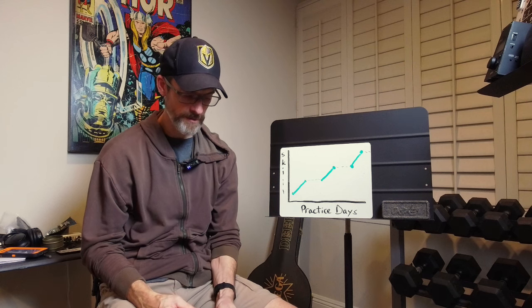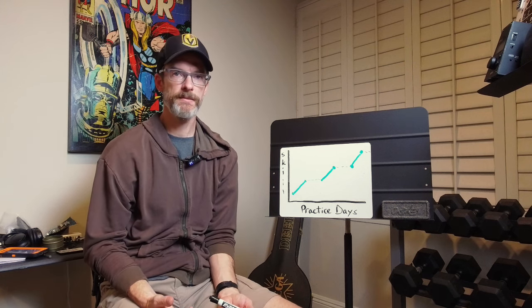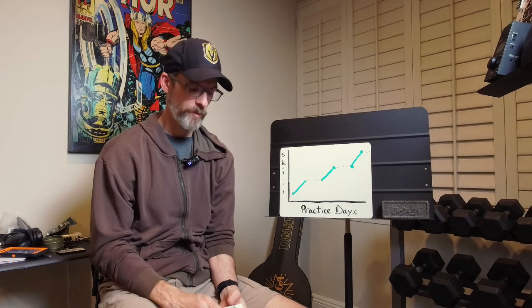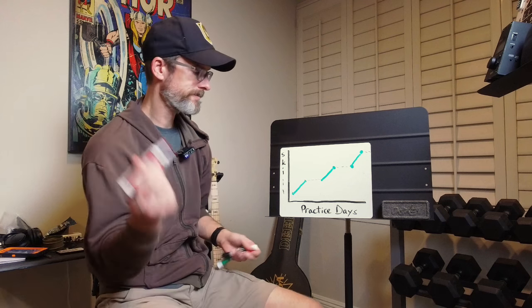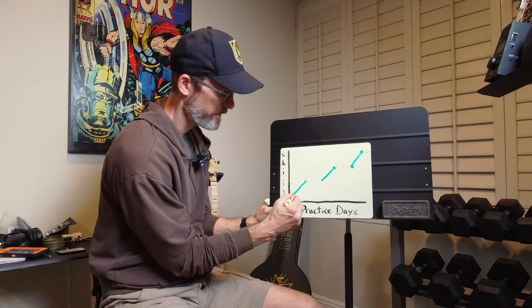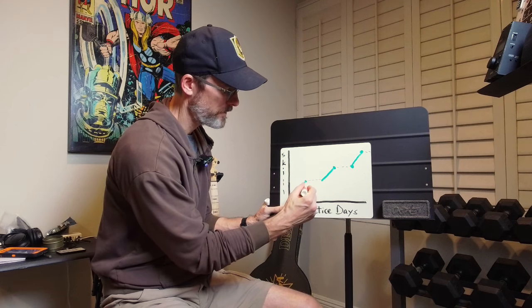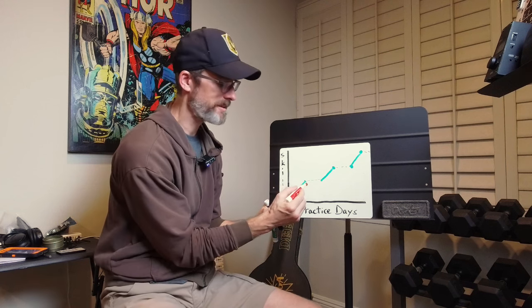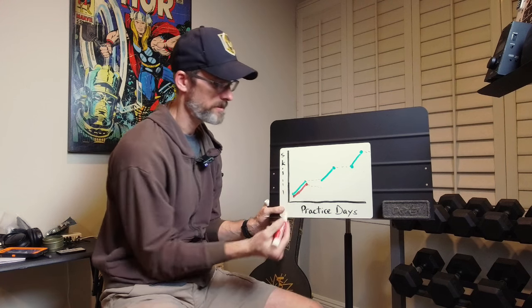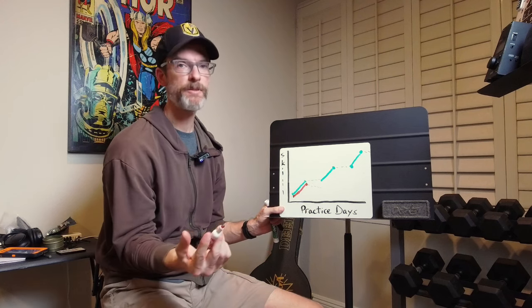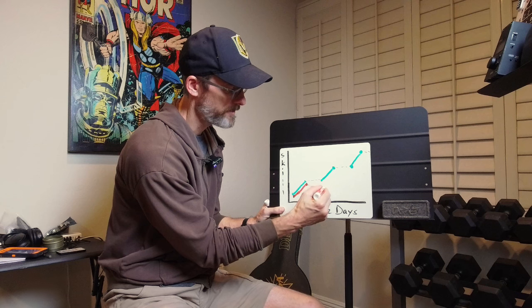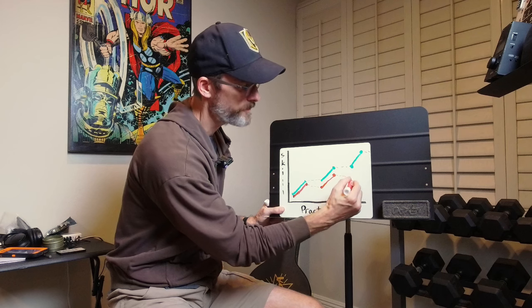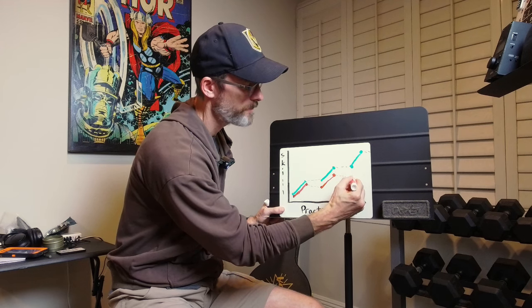We go cold between practices and that manifests as effectively a loss in skill. So truly what practice looks like, I'm going to use a red pen for this, is we start practice, we gain some skill during practice, we stop practicing, we start losing some skill as we go cold. And how much skill we lose depends on the length between practices. Start practice again, build some skill, stop, lose a little bit of skill, practice again, and so forth.